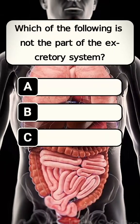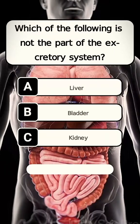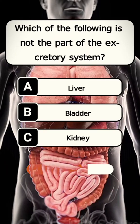Which of the following is not a part of the excretory system? Answer A. Liver.